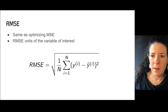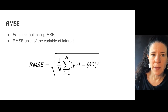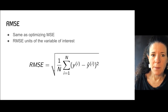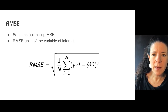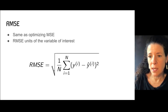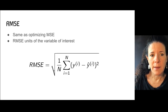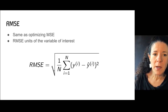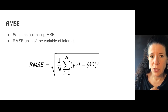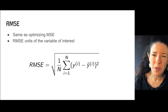Another metric people talk about is RMSE — the square root of MSE. The difference between MSE and RMSE is that RMSE is in the units of the variable of interest, so it may be a little bit more interpretable than MSE.